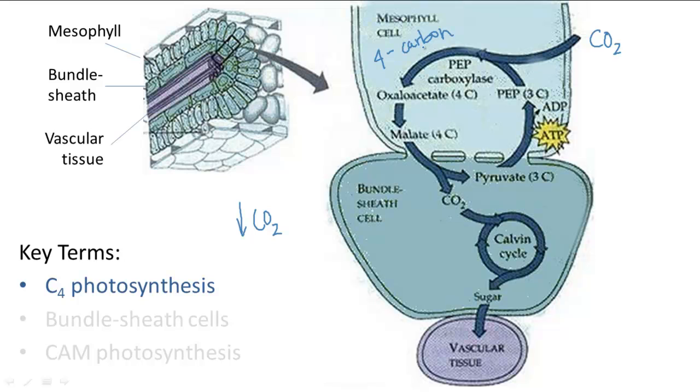Why does this extra cycle occur? The reason is because the enzyme used to convert CO2 into a 4 carbon compound has a much greater affinity for CO2 than the enzyme that would start the Calvin cycle. And so in that way, despite lower CO2 levels entering the plant, just as much CO2 is still being captured.